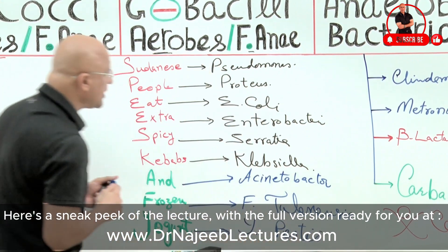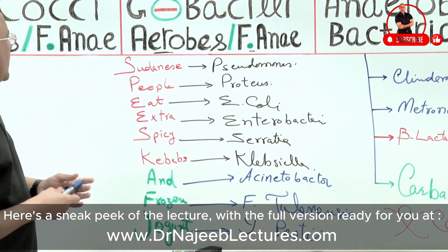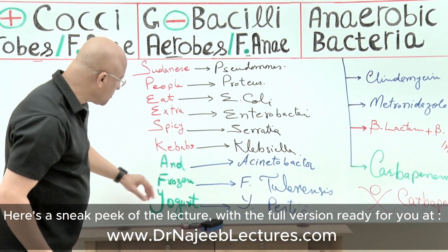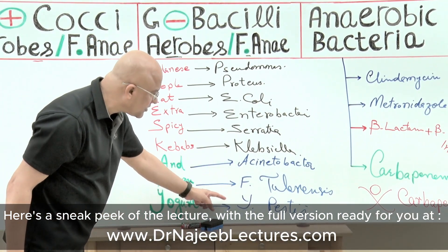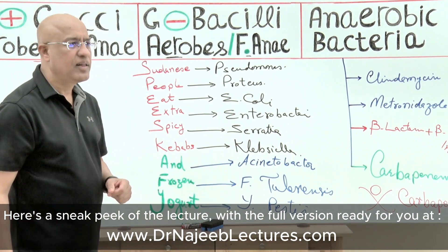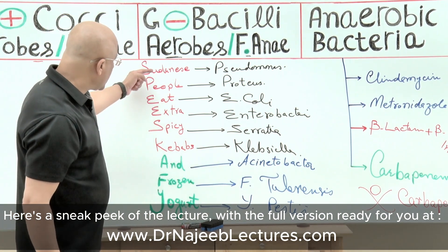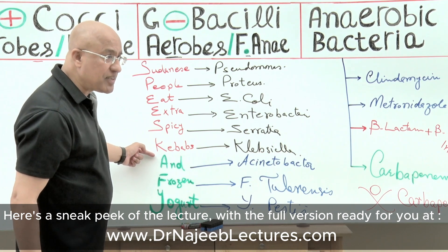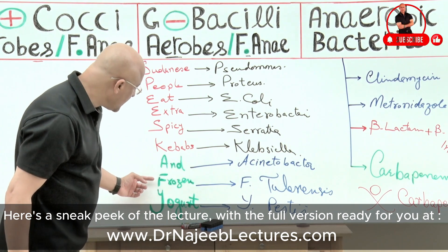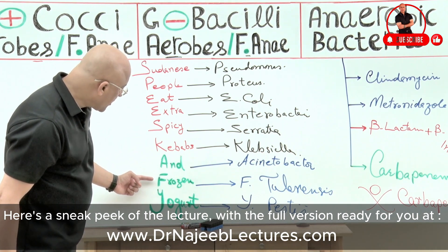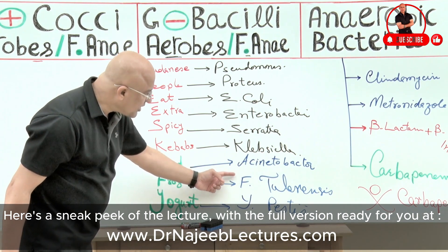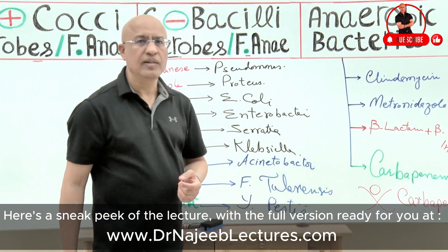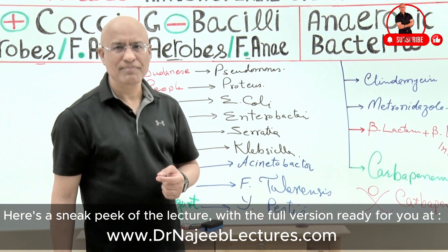And yogurt should remind you of Yersinia pestis. These are some very important gram-negative aerobic bacilli. Francisella tularensis and Yersinia pestis are specifically coccobacilli. Thank you.